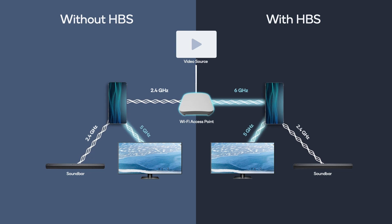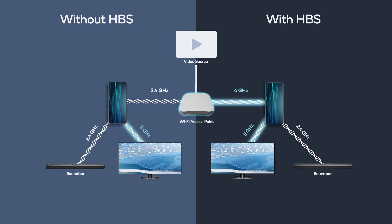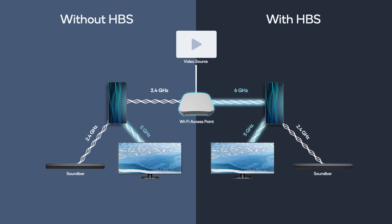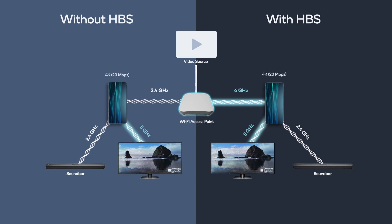On the right side you see high band simultaneous (HBS), with 5 GHz from the phone to TV and 6 GHz from the AP to the phone, which frees up 2.4 GHz just for Bluetooth.